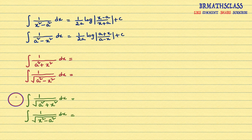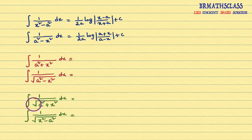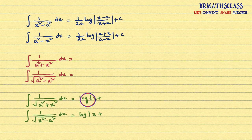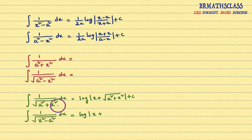Now, the last two: integral of 1 divided by root over a squared plus x squared dx, and integral of 1 divided by root over x squared minus a squared dx. You observe in the denominator both expressions have a square root. For these, the answer starts with log mod x plus. Now, what expression is there in the denominator? Same thing you write: log mod x plus root over a squared plus x squared plus c. So integral of 1 divided by root over a squared plus x squared dx — its answer is log mod x plus root over a squared plus x squared plus c.